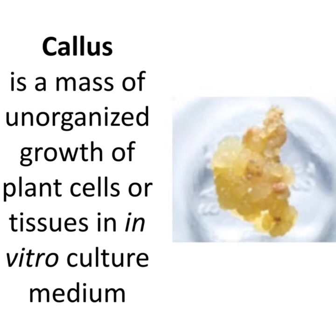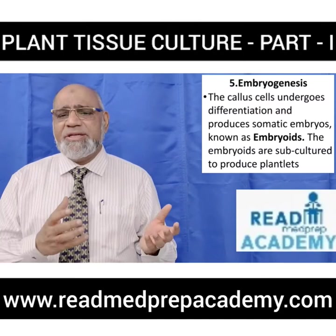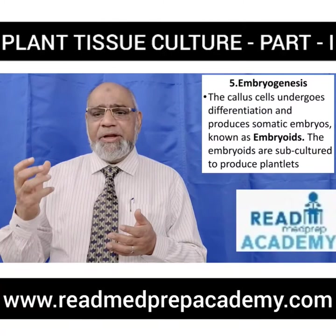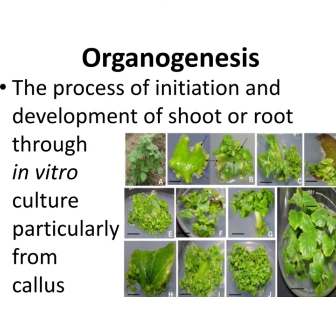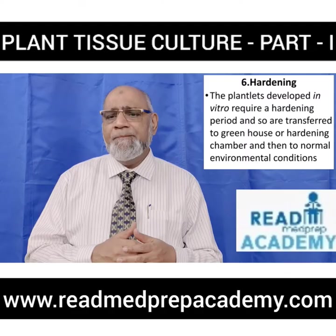During embryogenesis, callus cells undergo differentiation and produce somatic embryos known as embryoids. The embryoids are subcultured to produce plantlets. Here you can see callus culture where calluses are separated into a different medium, forming new plantlets. Organogenesis is the process of initiation and development of shoot or root through in vitro culture, particularly from a callus; in the images you can see development of root and shoot systems in the formation of plantlets.